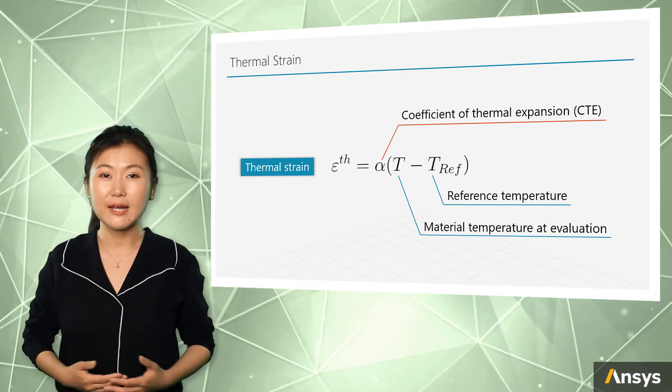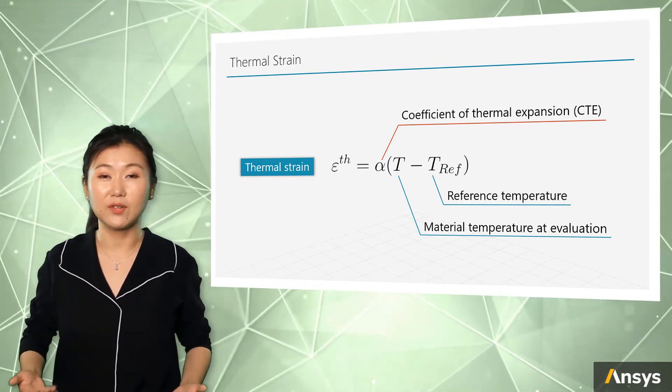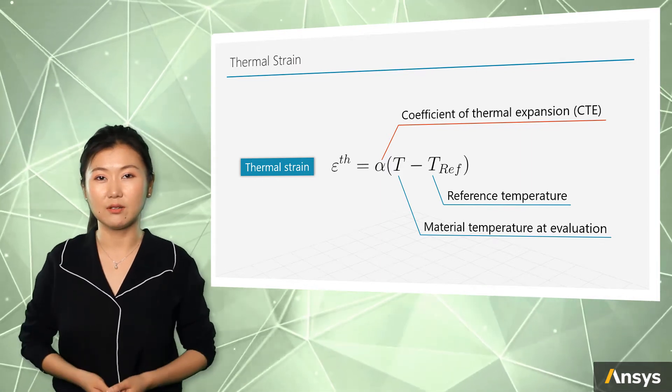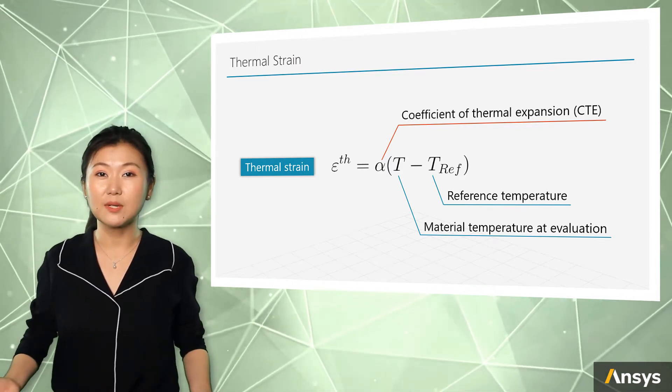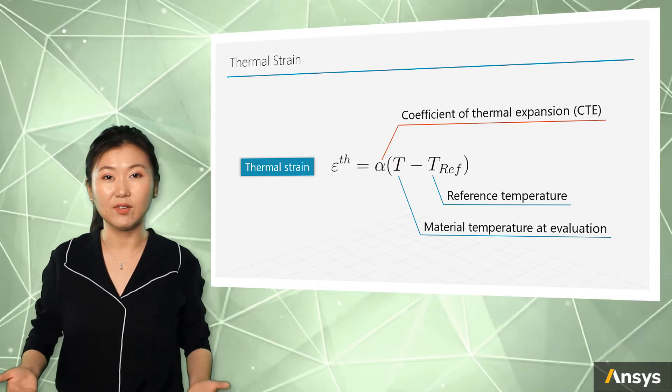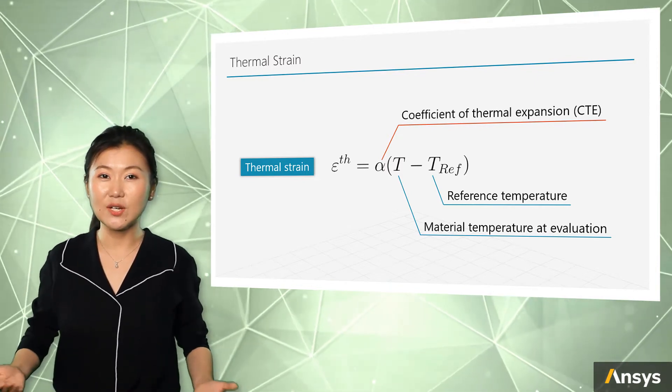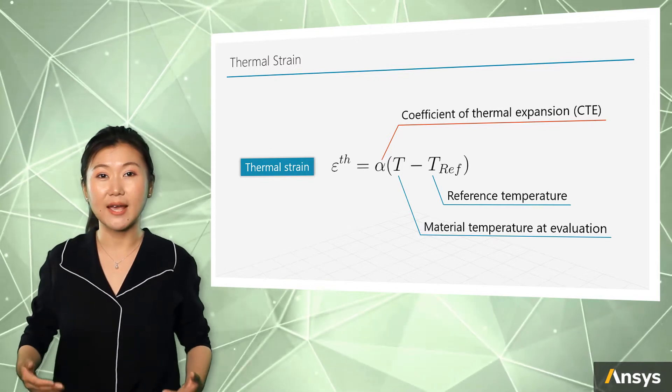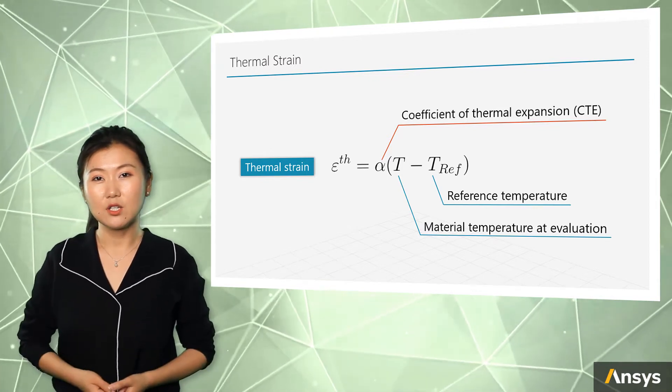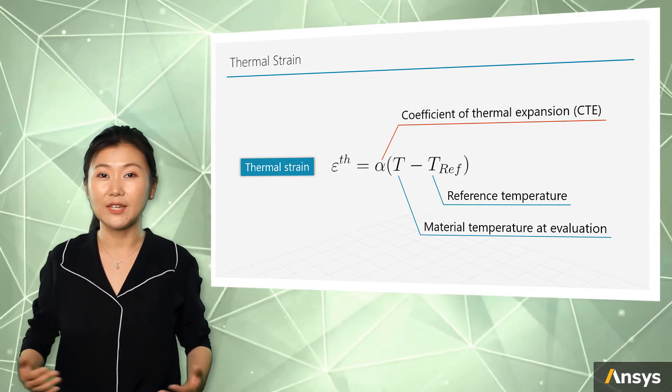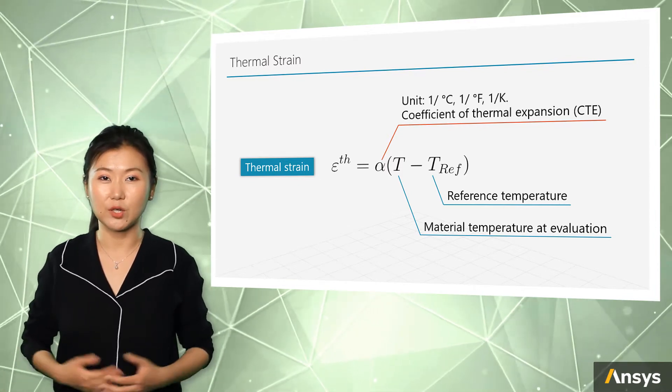The reference temperature is basically the initial temperature of the body when there is no thermal strain. It could be the environment temperature or it is a given condition for the body. Because strain is a unitless quantity and temperature has unit in degree, so for the coefficient of thermal expansion alpha, the unit is inverse temperature degree.